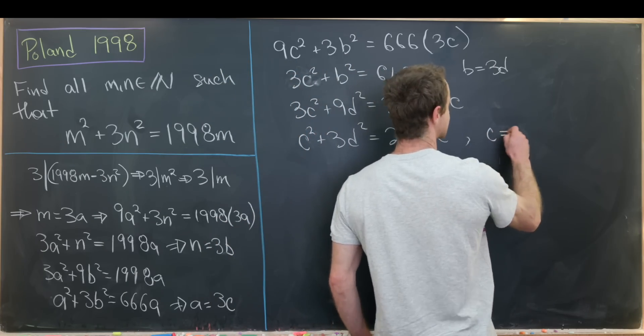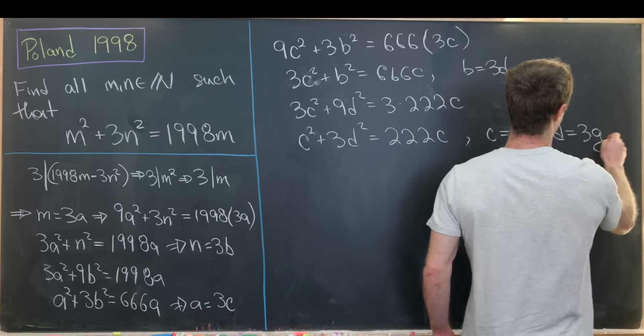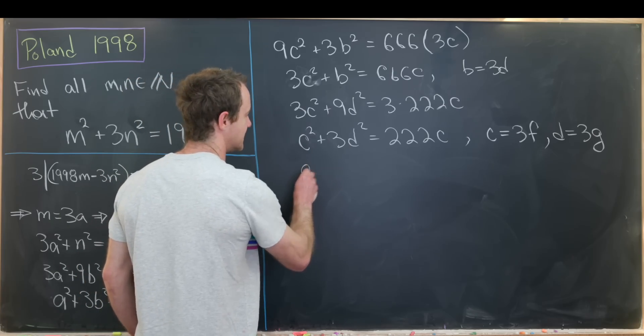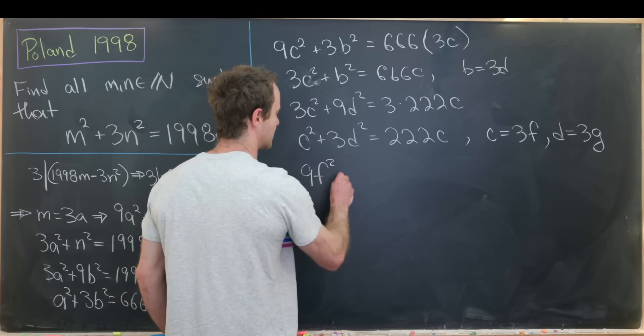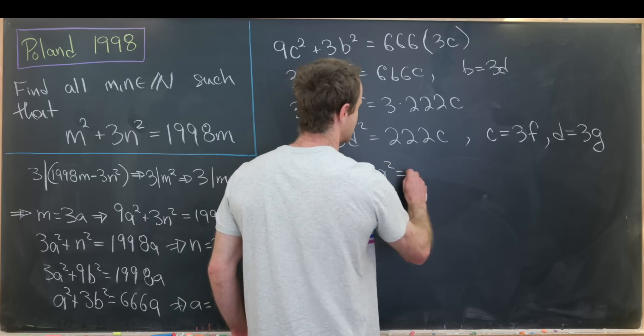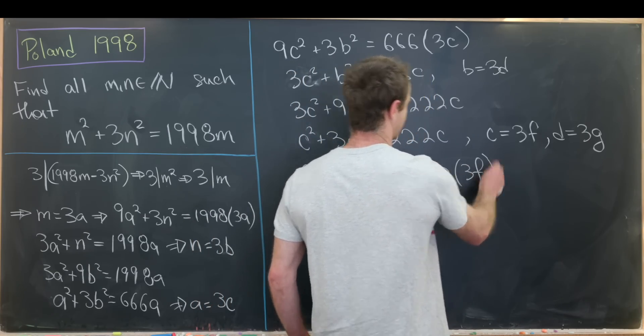So via the same strategy we've been using, we'll see that c is a multiple of 3, we'll call it 3f. And d is a multiple of 3 as well, we'll call it 3g. But that'll leave us with 9f squared plus 27g squared equals 222 times 3f.